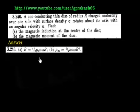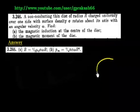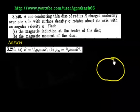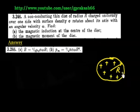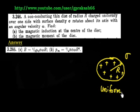This question gives us a non-conducting thin disk of radius R. This disk is charged uniformly — one side has a surface charge density sigma, which is a uniform distribution of charge.